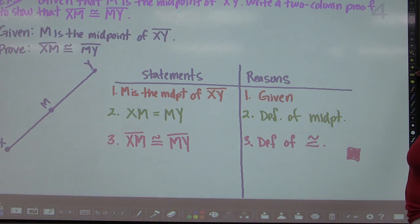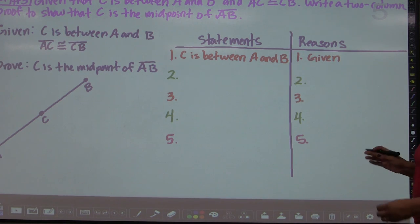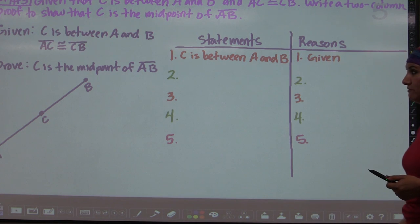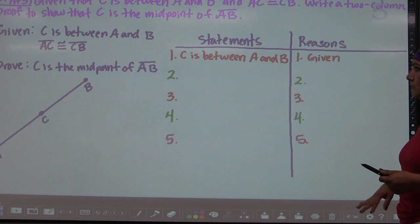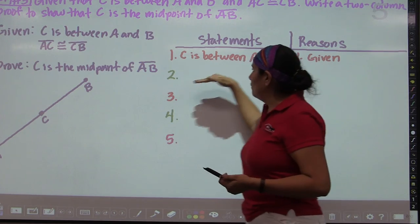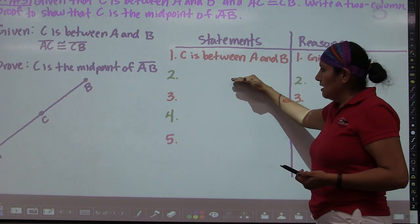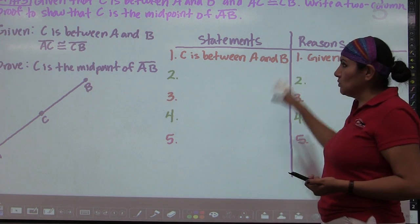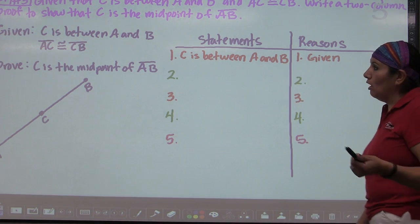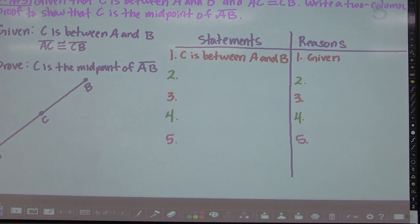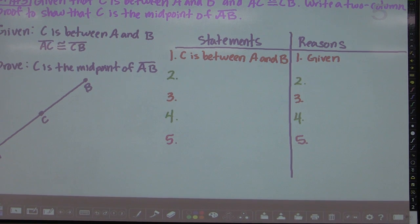Now try the do-it-yourself proof question. There are five steps and two givens — one given, then a link, then another given, then a link, then your final answer. We'll go over it in class if needed. Once you've completed that, you've finished your notes for this lesson. Thanks for watching and I'll see you in class.